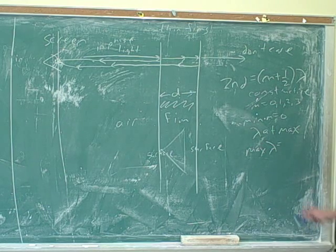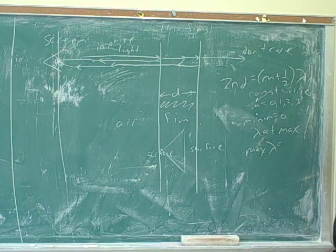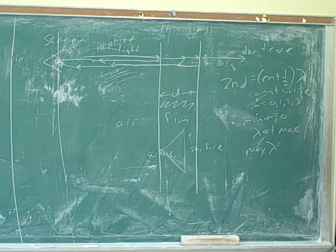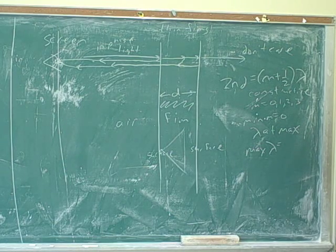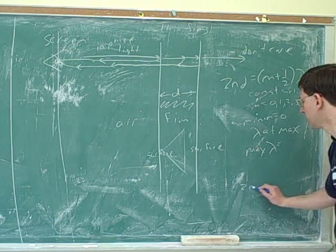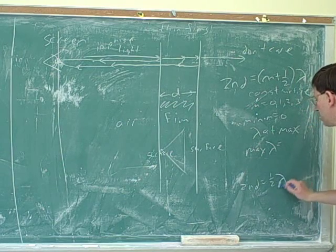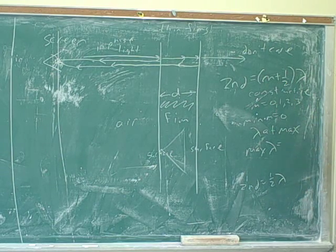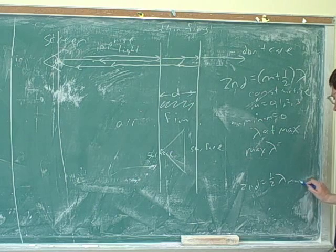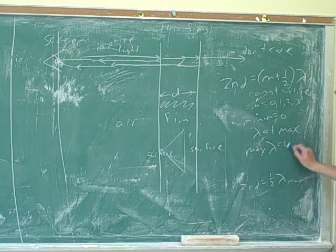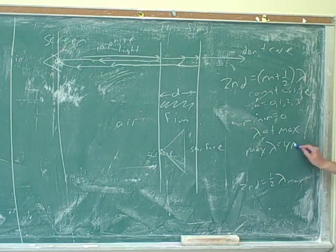How would we calculate this maximum wavelength that can experience constructive interference? Set M to zero. Yeah. You would just set M equal to zero, and then what would you get? It's one half lambda. That M would just be zero. Yeah. So that's actually a common type of question for thin films.